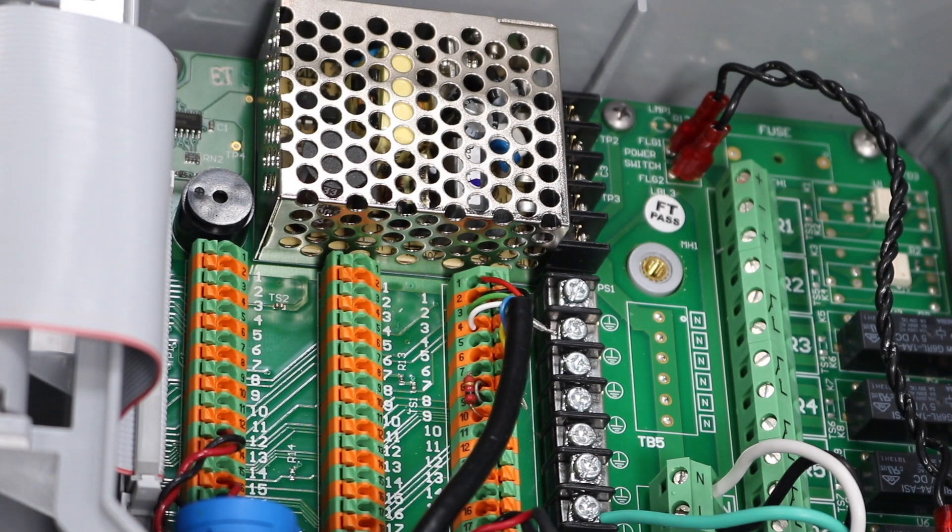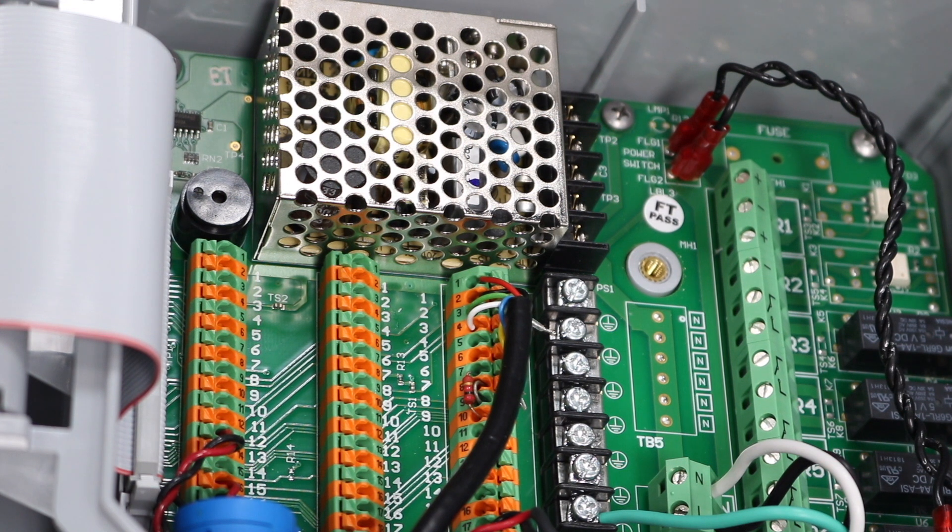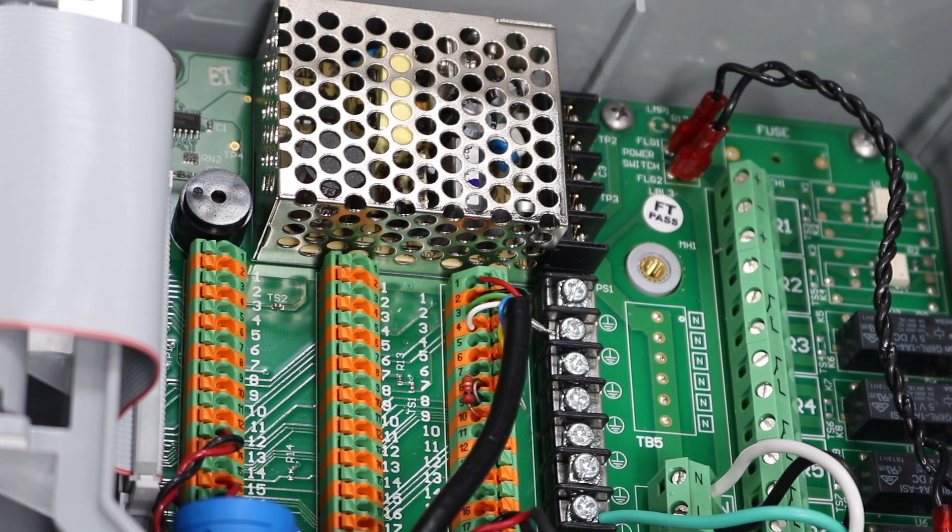To properly terminate the 4-20mA signal from the ST500 sensor to the W600, you will be landing your input signals to terminal block number 2.